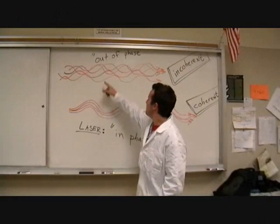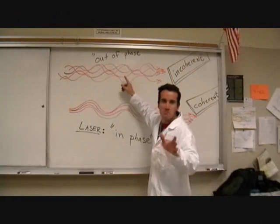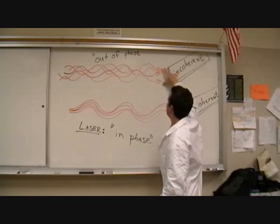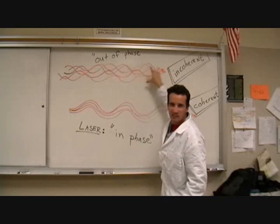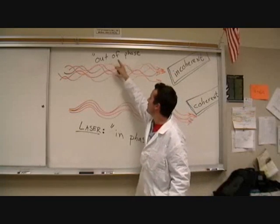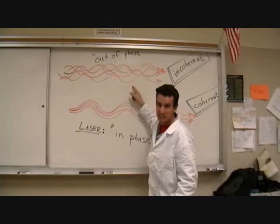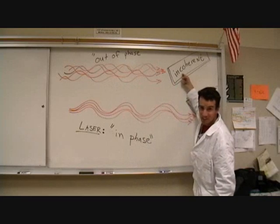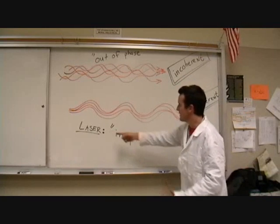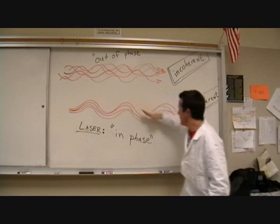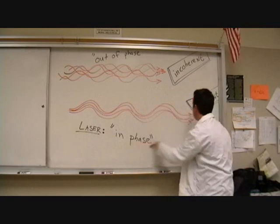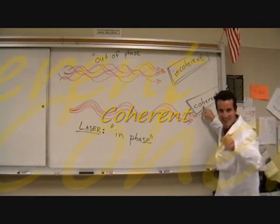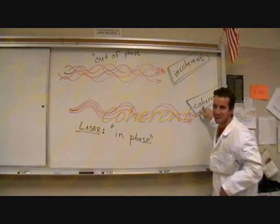But this is still not a laser. Take a look at this. We've got red light — it's monochromatic, it's collimated — but it's all mixed up. It's out of phase. We say it's incoherent. Laser light, on the other hand, is in phase. It's coherent. And that's what makes laser light special.